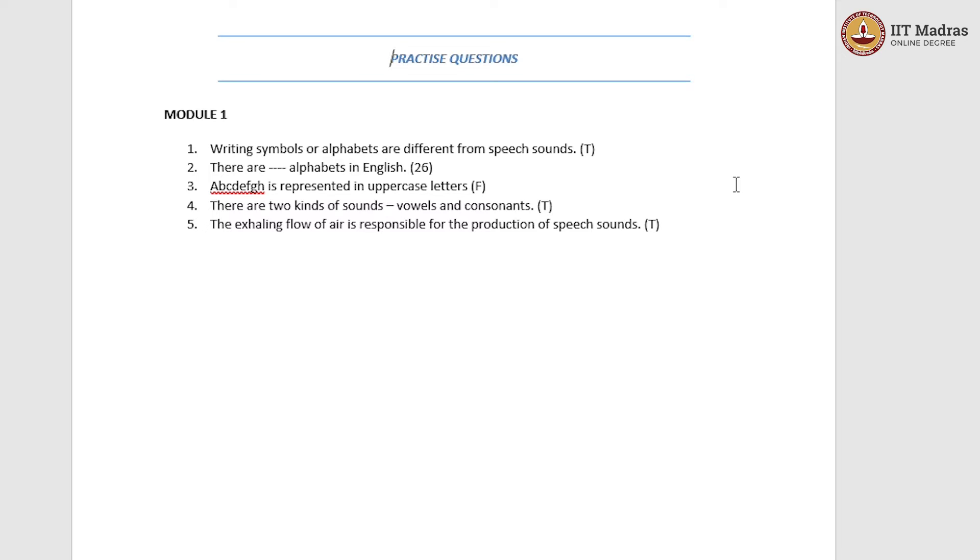Now, let us get to the second question. There are dash alphabets in English. It is a filling the blanks question. What is the answer to that? Count the number of alphabets from A to Z. So, there are 26 alphabets. But what needs to be noted here is that you should not mistake alphabets with oral sounds.